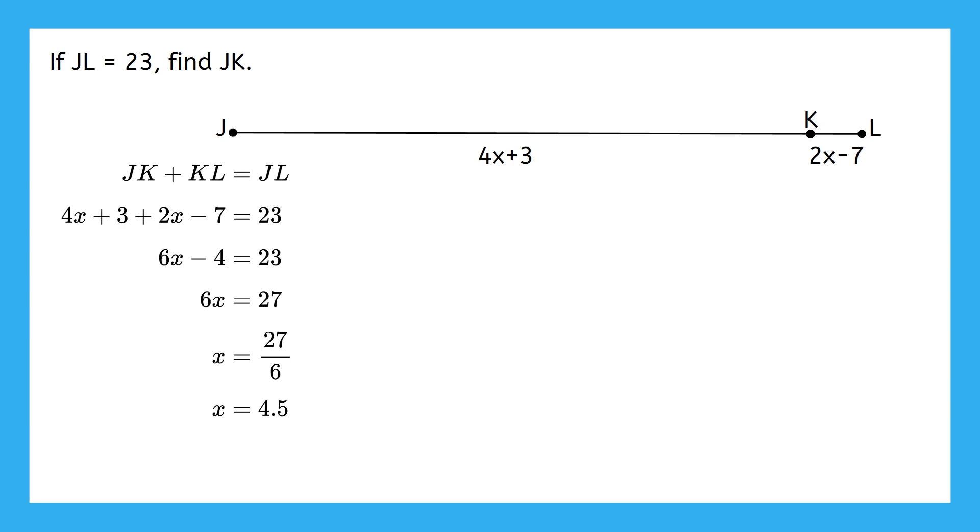What we just found here is the value of X. But is that what we were asked to find? No, we were asked to find JK. We now have to substitute 4.5 into our expression for JK to get our final answer. This gives us 21 for the length of JK. We can write our final answer and be confident that we found what we were looking for.